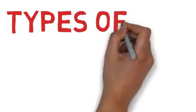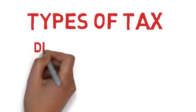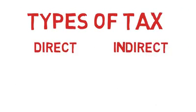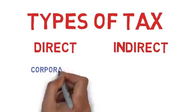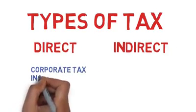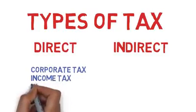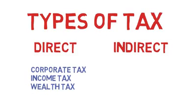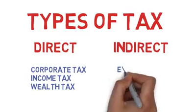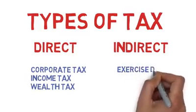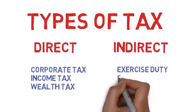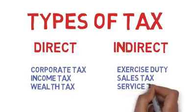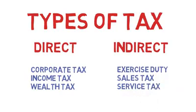There are actually two types of taxes. One is direct tax and the other is indirect. The direct tax is one whose liability cannot be shifted to someone else, like corporate tax, income tax, wealth tax etc. But indirect tax is the tax whose liability can be shifted to someone else — it includes central excise tax, sales tax, services tax etc.